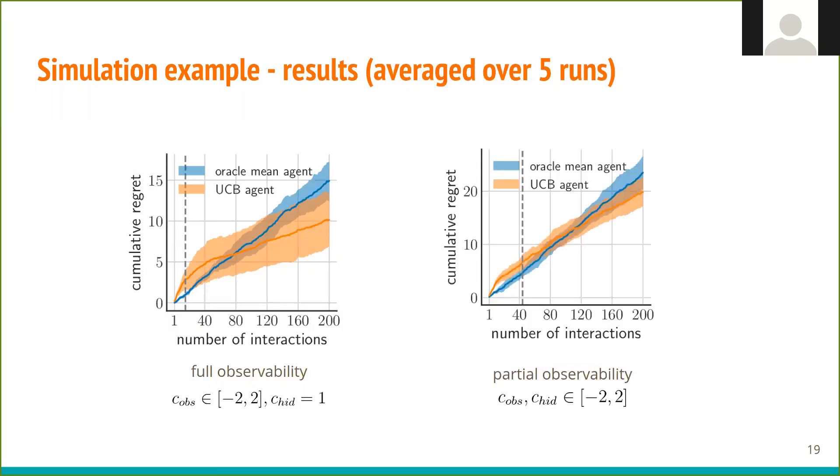In partial observability scenario, we can see that due to insufficient knowledge, UCB agent takes more time to find good settings, but it still can improve over Oracle mean agent in a reasonable number of interactions.